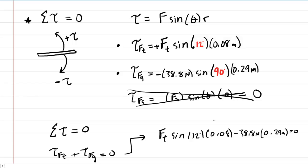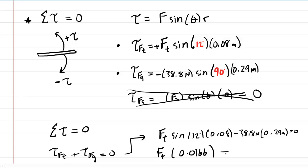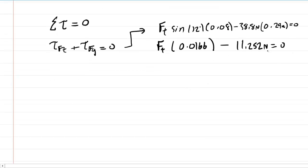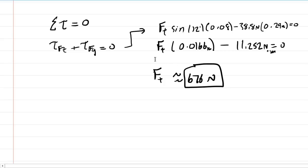In your calculator, compute sin(12°) × 0.08 — making sure it's in degree mode — to get 0.0166. So you have F_t × 0.0166 − 11.252 newton-meters = 0. Adding 11.252 to the other side and dividing by 0.0166 gives F_t approximately equal to 676 newtons. That is the correct answer for the F_t force.